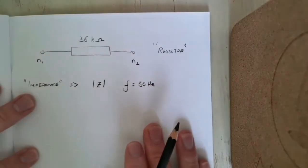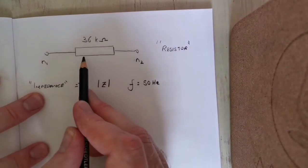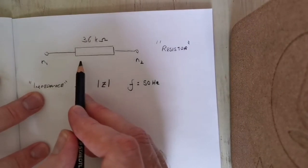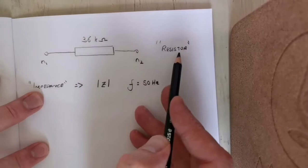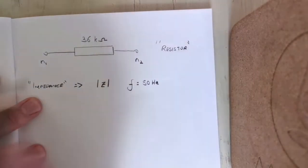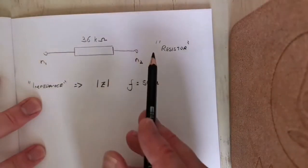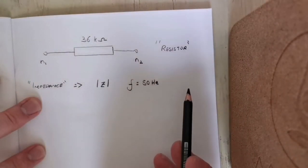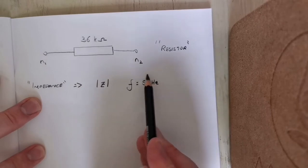Each component in a circuit will have a certain impedance depending on its frequency. The three components we look at are resistors, which in this case we have a resistor, or inductors and capacitors.